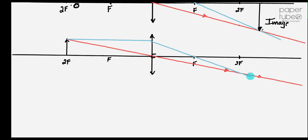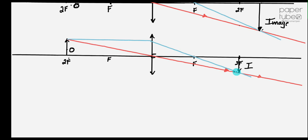Where the two cross — there's your image. There's your object and there's your image. The image is real because the rays really cross. It's inverted, it's upside down, it's the same size as the object. Real, inverted, same size. What would you use that for? It says telescope erecting lens.